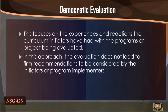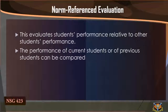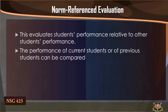Democratic evaluation does not lead to firm recommendations to be considered by the initiators or program implementers. Norm-referenced evaluation evaluates students' performance relative to other students' performance. The performance of current students or of previous students can be compared.